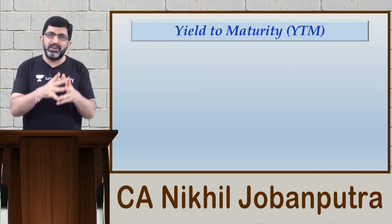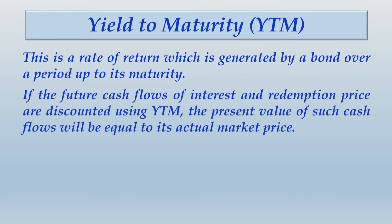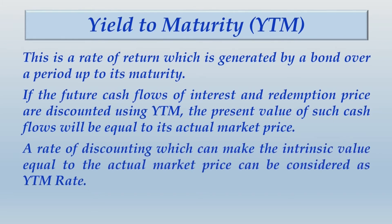Meaning of YTM — yield to maturity: it is the rate of return generated by a bond over the period up to its maturity. If the future cash flows of interest and redemption price are discounted using YTM, the present value of such cash flows will be equal to the actual market price. In other words, YTM is that discounting rate which makes the intrinsic value equal to the actual market price.